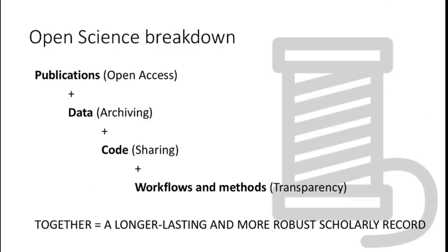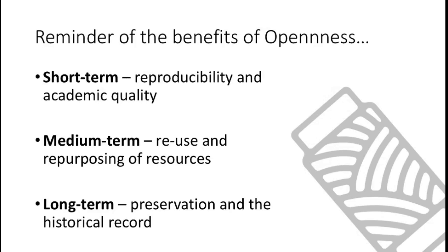A quick breakdown of what open science constitutes: open science is the combination of open access publication, data archiving, sharing of code and transparency and working methods, and together that contributes to a longer lasting and more robust scholarly record. The benefits in the short term are that academic quality can be checked and assured, and that science can be reproduced where possible. In the medium term, the reuse and repurposing of scholarly resources, and for the longer term, preservation and the maintenance of the historical record.